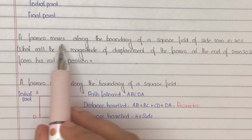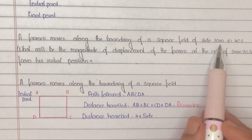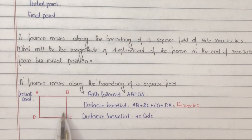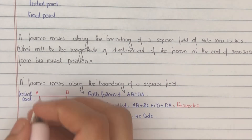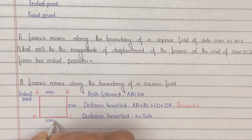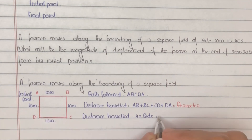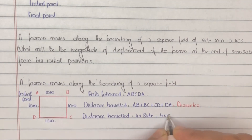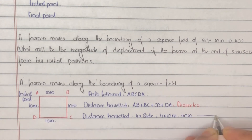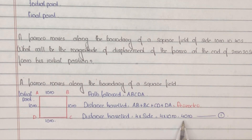The side length of the square is given as 10 metres. It is a square, so all sides are equal. The distance travelled will be 4 × 10 = 40 metres. Mark it as Equation 1 — when he completes one round, the distance travelled will be 40 metres.